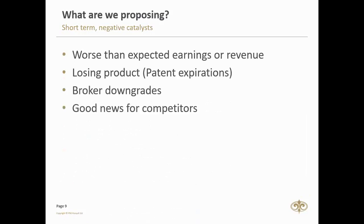The fourth negative catalyst is good news for competitors. In the restaurant industry, for example, if Taste Holdings with Domino's Pizza is losing market share to Debonairs, or a competitor brings a new product on board that everyone flocks to — it feeds through to the share price. In the construction sector, two companies bidding for the same contract — whoever wins the contract sees its share price go up while the other may fall.